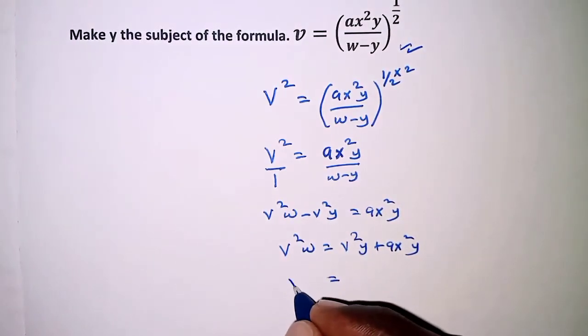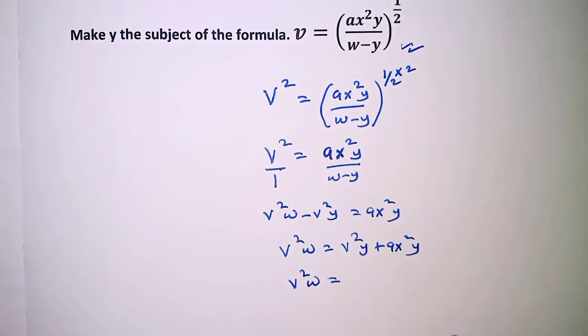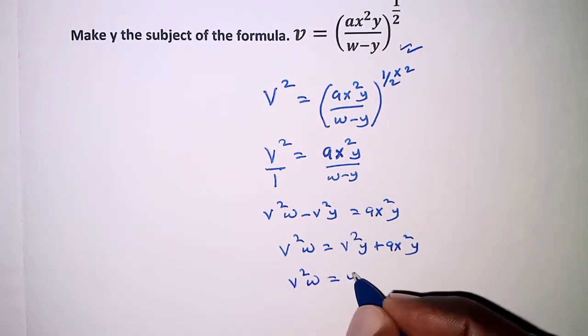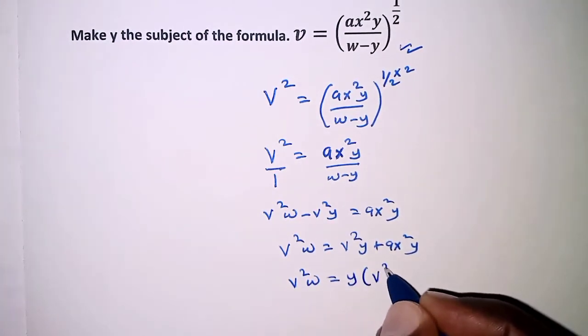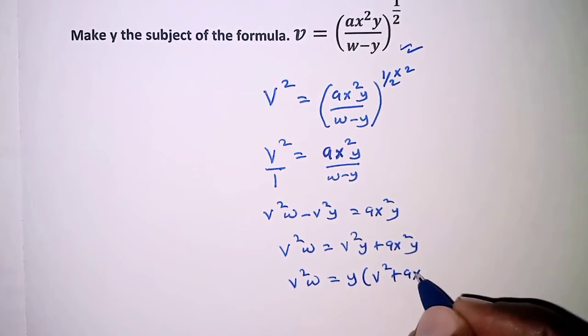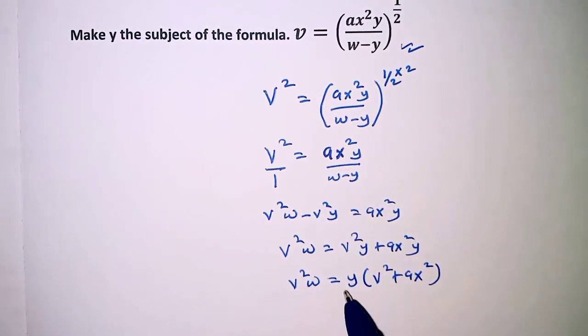It can be factored out, so we have V squared W on the left hand side, and on the right hand side we have Y into V squared plus ax squared. So dividing both sides by V squared plus ax squared...